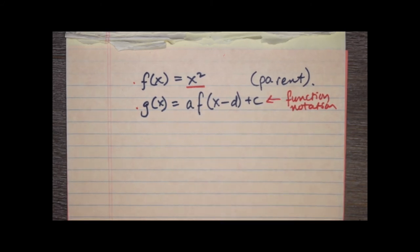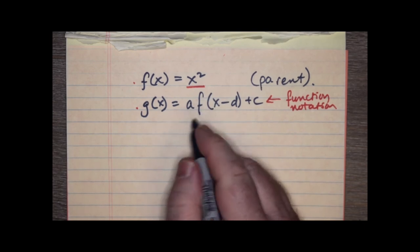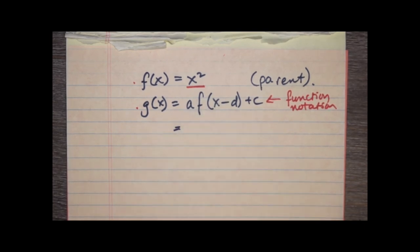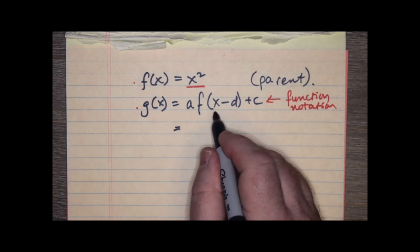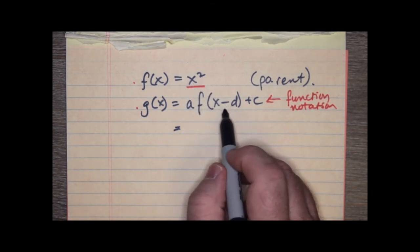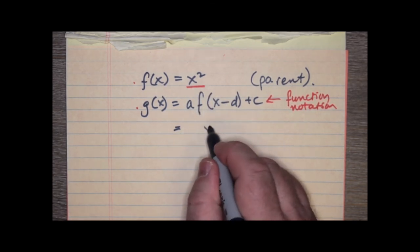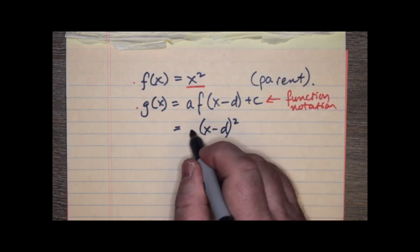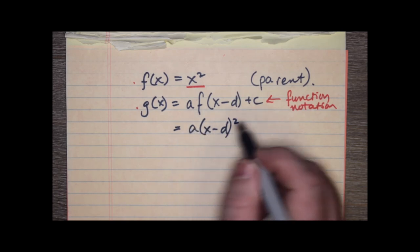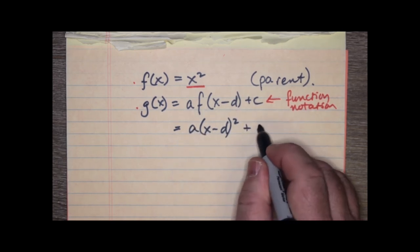So, we know that f at x equals x squared. So, the way we think of this is we start off with, well, it's not x squared that we're worried about. It's x minus d, all squared. So, the whole function is multiplied by a, and we're adding c to it.